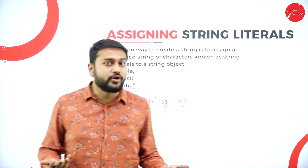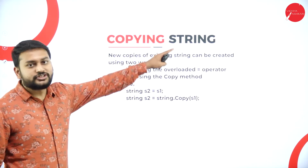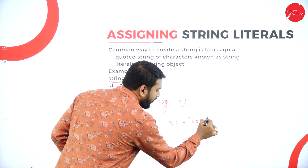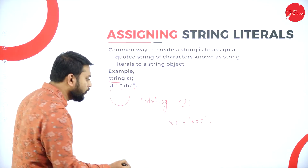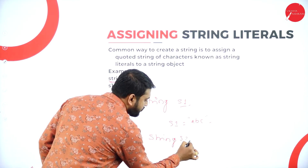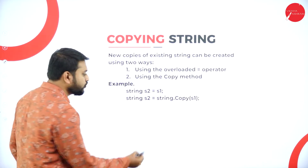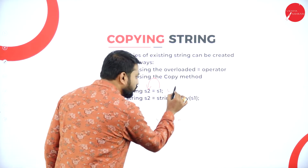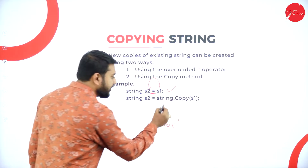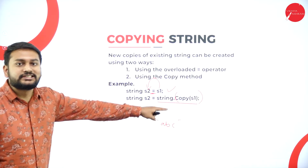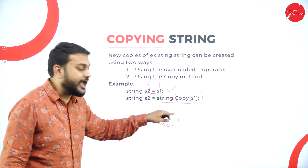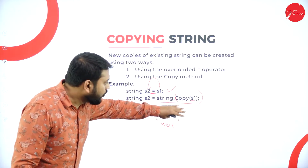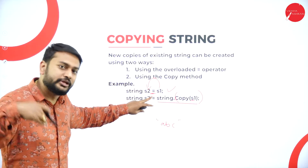The second method is copying a string. If s1 contains 'abc', you can copy it to s2 either by using the assignment operator or by using the predefined copy method: String.Copy(s1) assigned to s2. These are two different ways to copy the content of one string object to another.